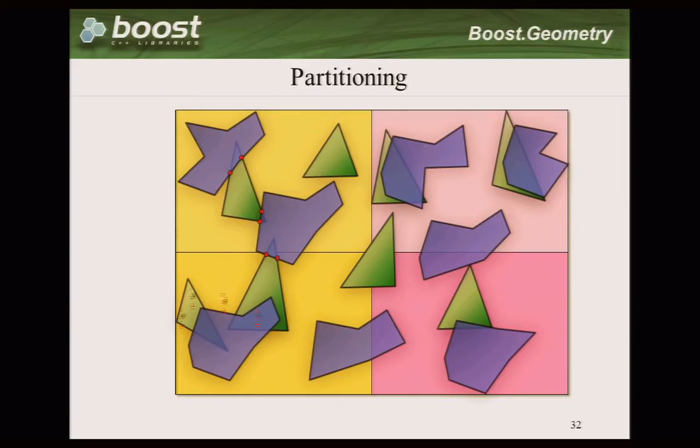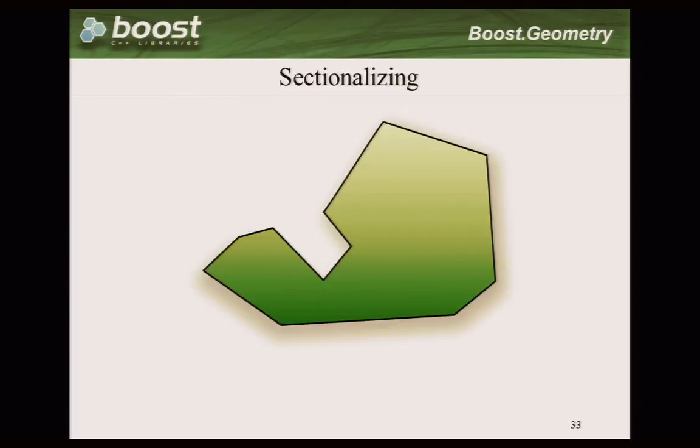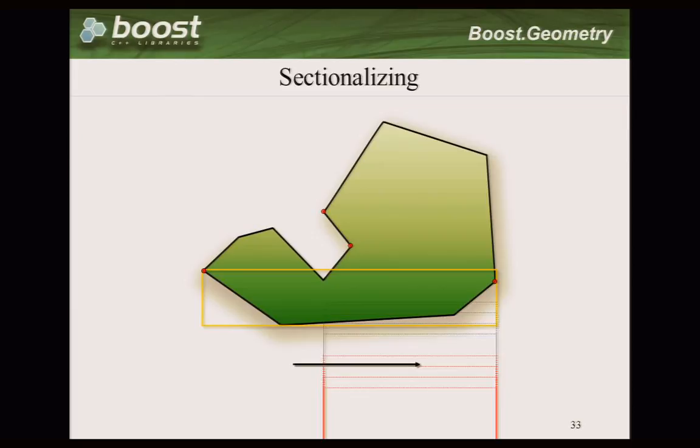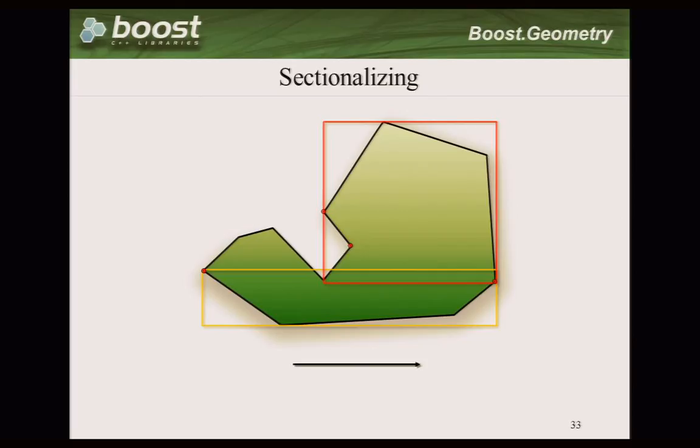Then the intersection points can be calculated much more easily. It doesn't work only for intersection points but also a generic algorithm, so you can use it to assign things or do other things. Besides partitioning, we have sectionalization. That breaks the polygon up into monotonic sections. This is one section - if you are here, you only think about that part and forget the rest of the polygon because that's outside your scope.